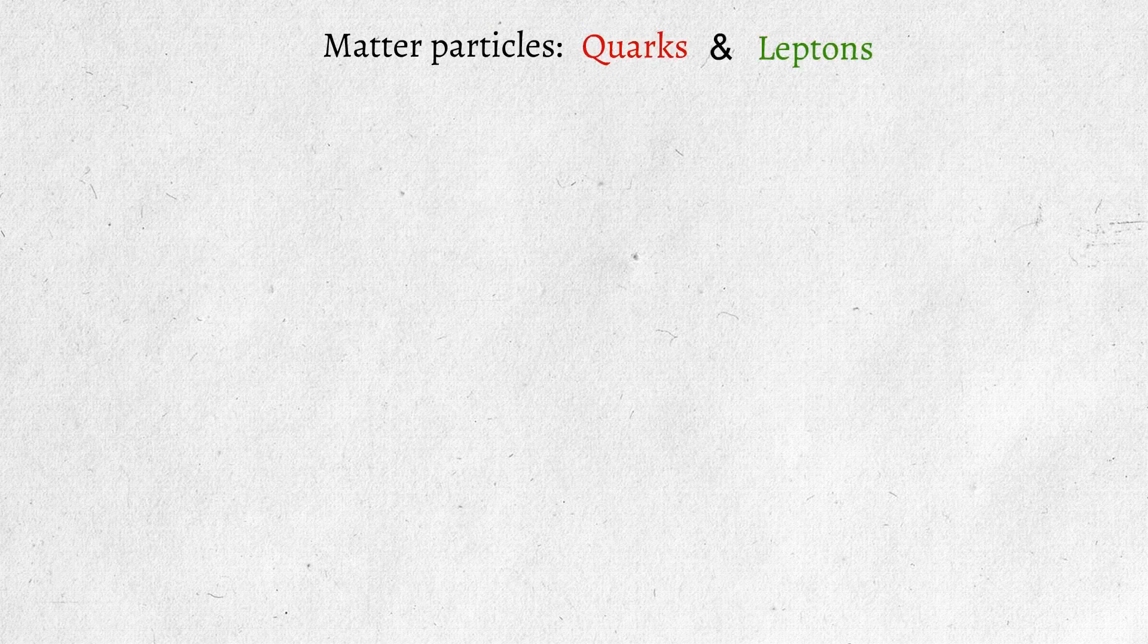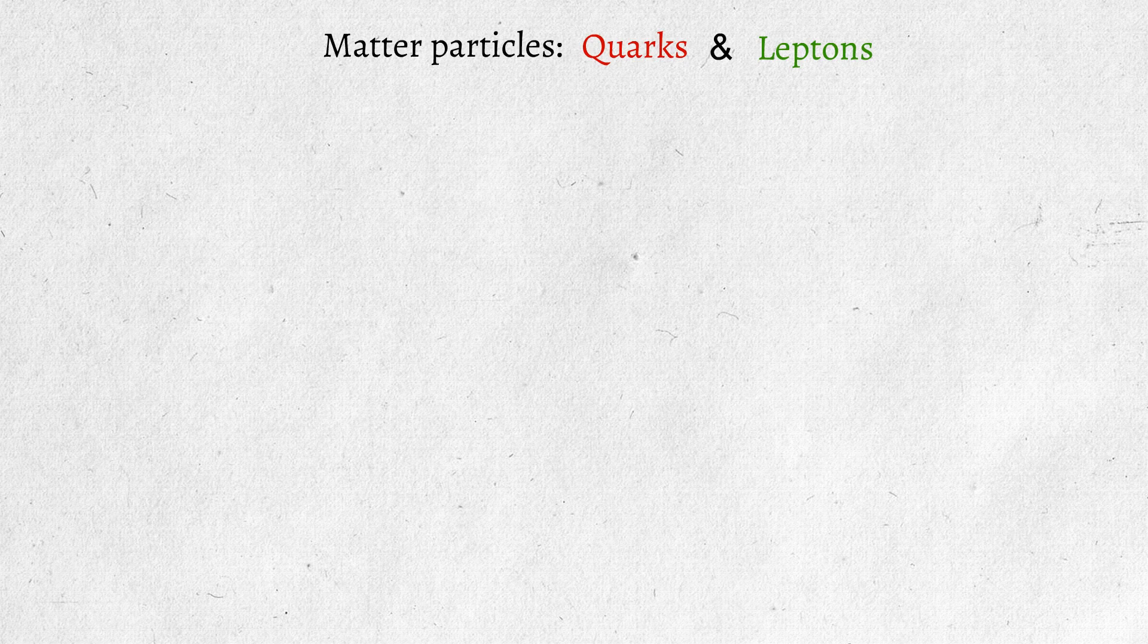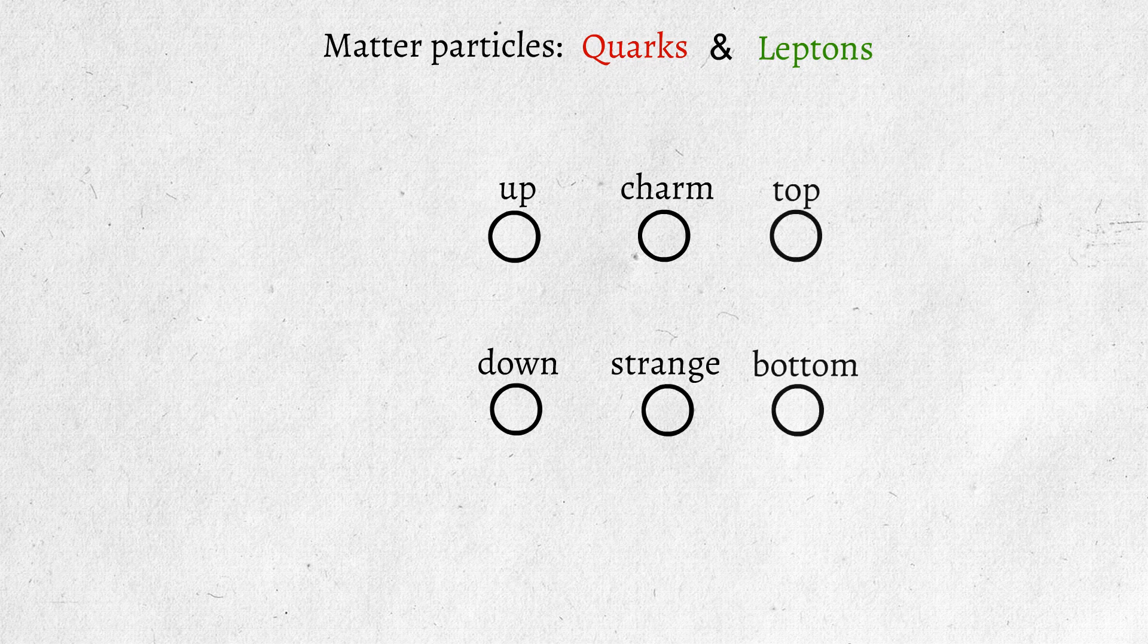The quarks are particles with both strong and electric charge, so they feel both the electromagnetic and the strong force. There are six types of quarks: the up and the down, the charm and the strange, and the top and bottom quarks.